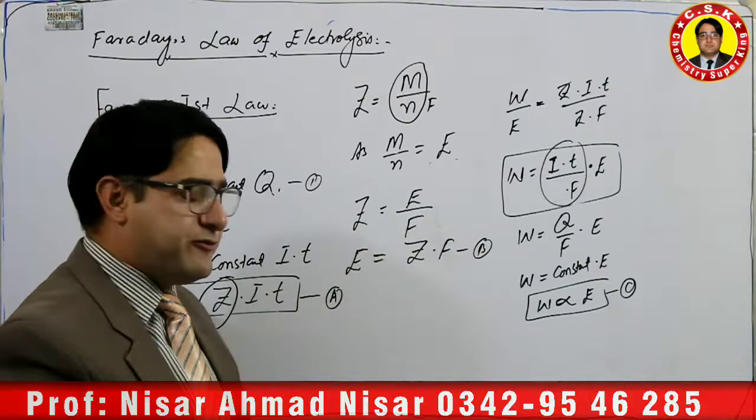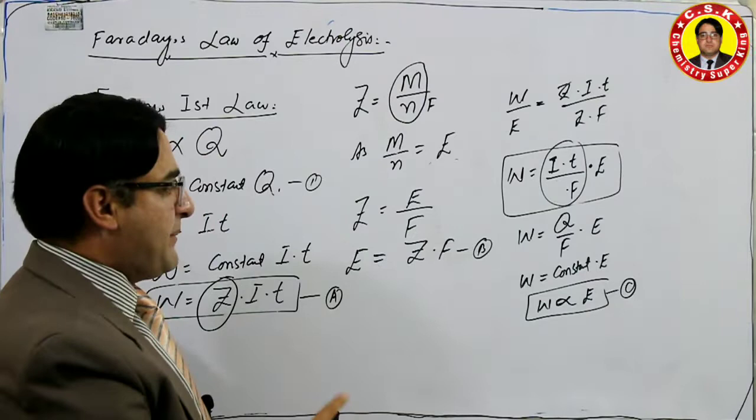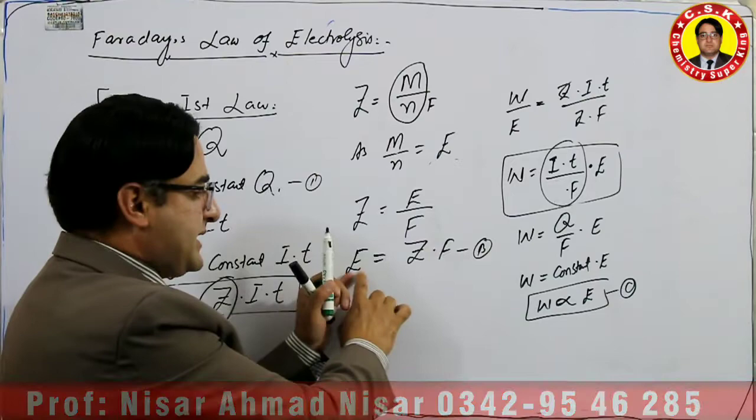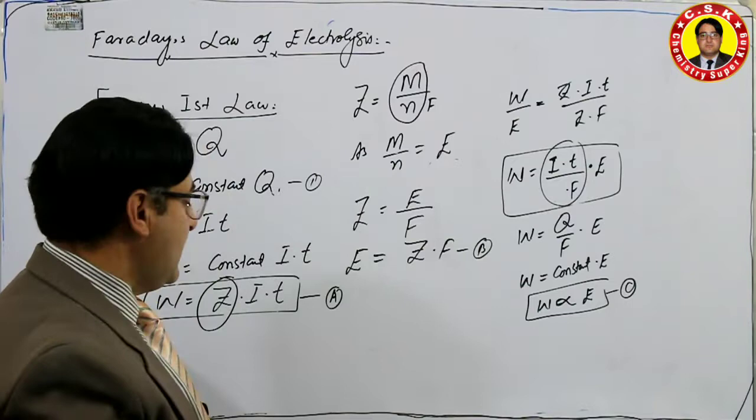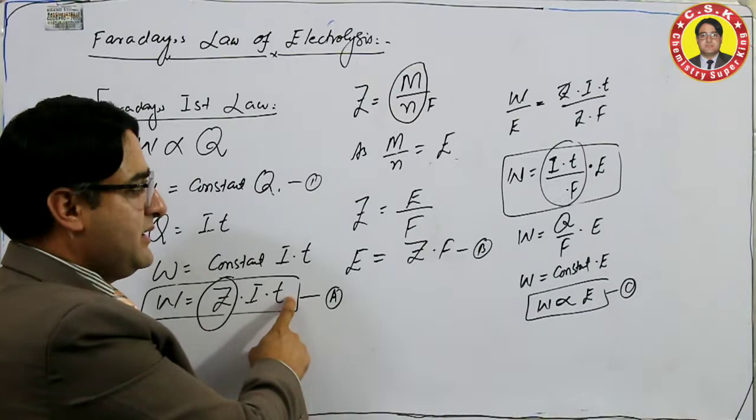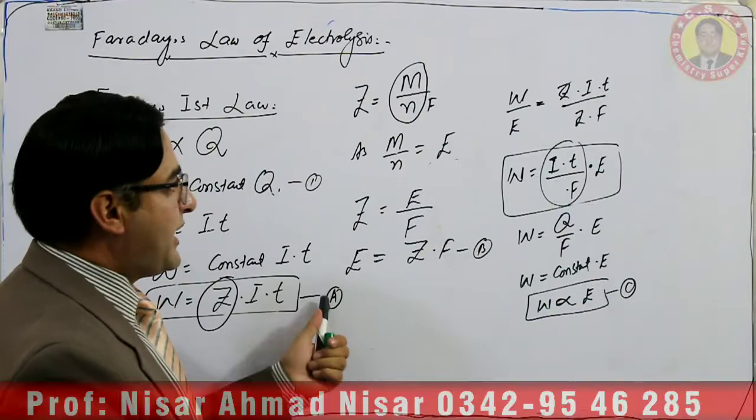So Z is directly proportional to the chemical equivalent. Rearranging: E = Z × F — that is Equation B. Equation A was W = Z·I·T, and Equation B is E = Z·F. Now I will divide Equation A by Equation B.